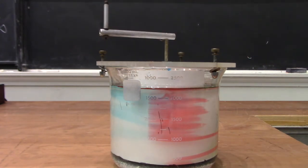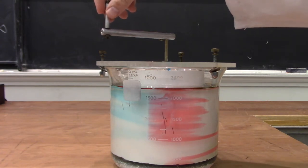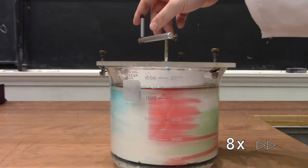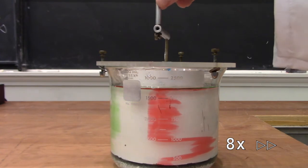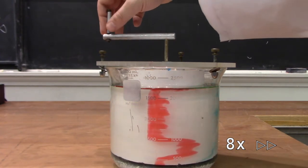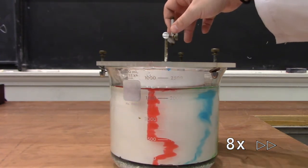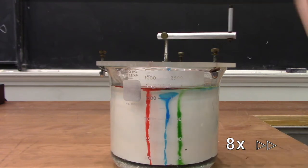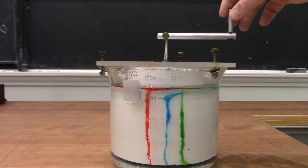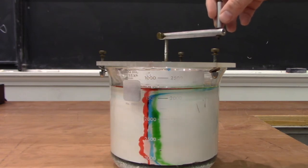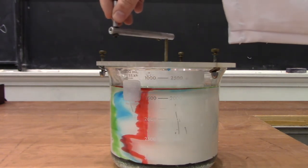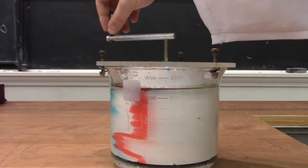Now the green and blue have both smeared the entire way around the cylinder.